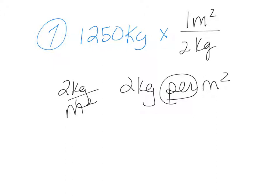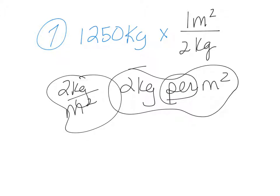Whenever you have something like this where it's per, you can flip them either way, whichever you need, to make sure you can cancel. I did it up here this way because I can cancel the kilograms in the top and the bottom, and then I'm going to be left with meters squared. So I'm going to take 1250 divided by 2, and my answer is going to be 625 meters squared.